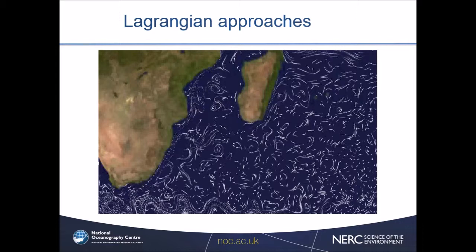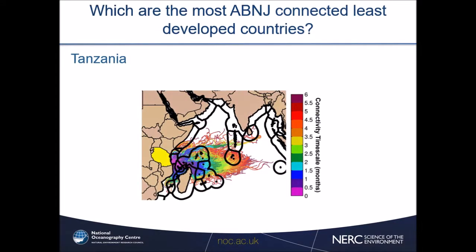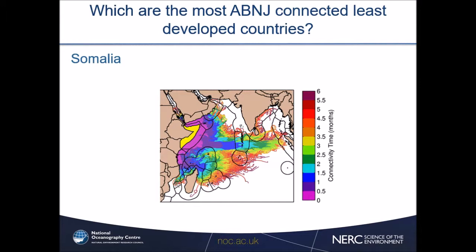What we found is that some coastlines of some countries are much more connected to the high seas than others. So which are the most high seas-connected least developed countries in the world? In the Indian Ocean, it is Somalia. What you see in the picture is what we call a circulation footprint — imagine floats being thrown into the high seas, going with the currents, and some of them arriving at the Somalia coastline. Colors show how long it takes the float to reach from the high seas to the coastal zone. In the purple area, connection takes about one month; in the red area, connection to Somalia's coastal zone takes around six months.